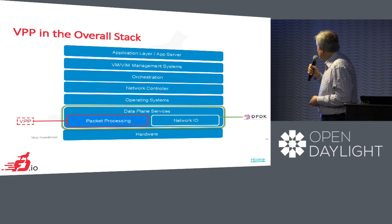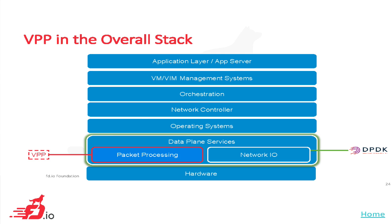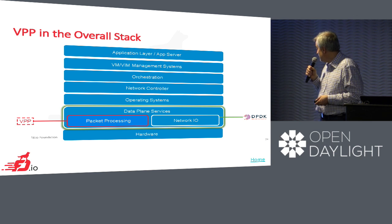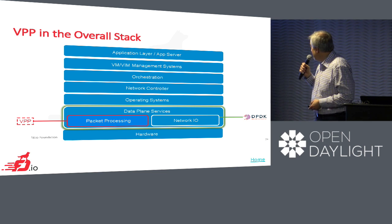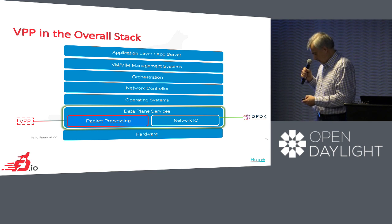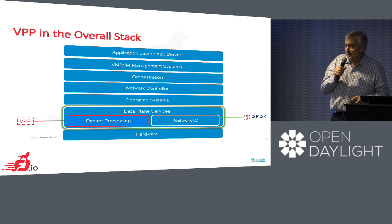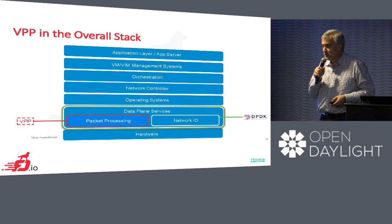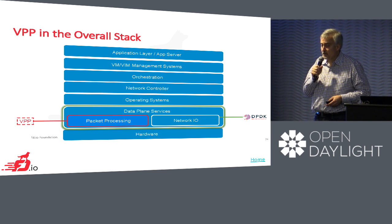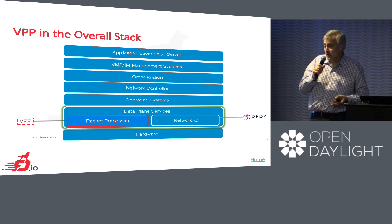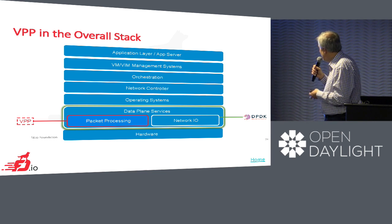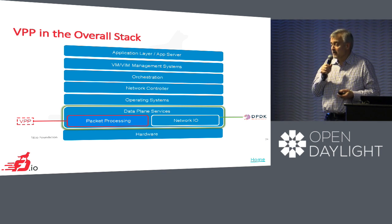When we look at VPP in the overall stack, it sits in the data plane services along with DPDK, with operating systems, controller orchestration, and VM management systems above. One really interesting thing for this panel — which is about the API between controllers and data plane services — is that you can see Open Daylight in this picture twice: as a network controller, and also as the basis for the Honeycomb agent, a really fast and high-performing NetConf agent on the northbound. The preferred API between the controller and the VPP-based forwarder is NetConf.